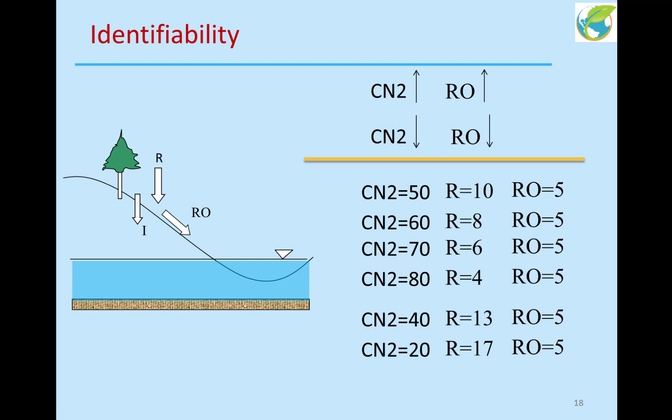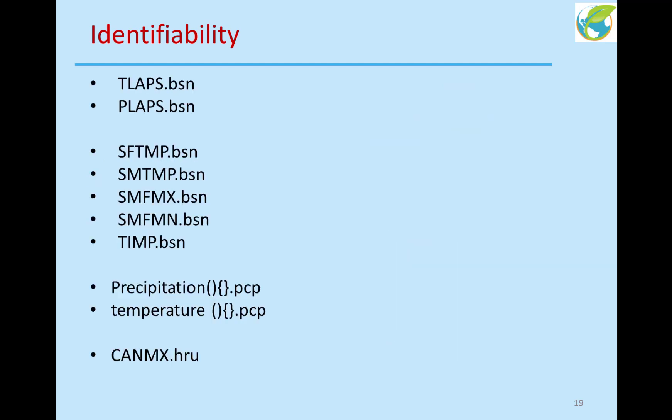So rainfall is a driving variable. You cannot fit a driving variable with other parameters. For example, canopy intercept is also a driving variable. Anything that puts water into the system is a driving variable and cannot be fitted with other parameters. It has to be fitted independently and then fixed, and then you can fit other parameters.